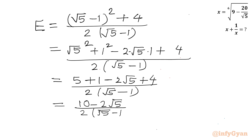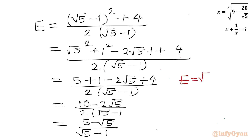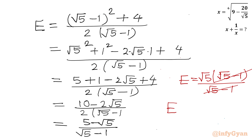I can see the numerator has 2 as a common factor, so dividing gives (5 minus √5) over (√5 minus 1). Taking √5 common from the numerator gives √5 times (√5 minus 1) over (√5 minus 1). We can cancel the (√5 minus 1) terms, so our required answer for the expression is square root of 5.